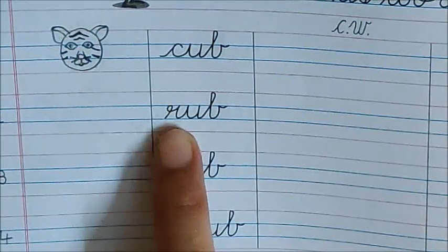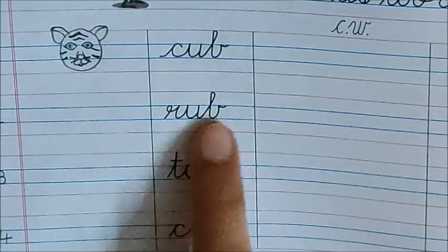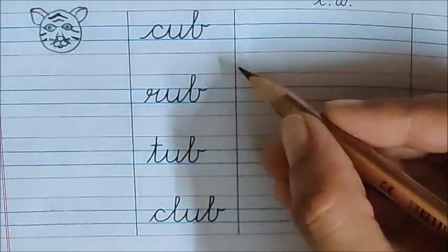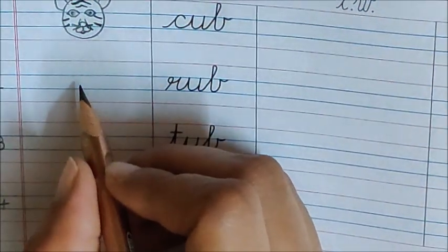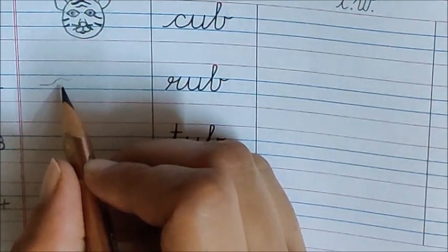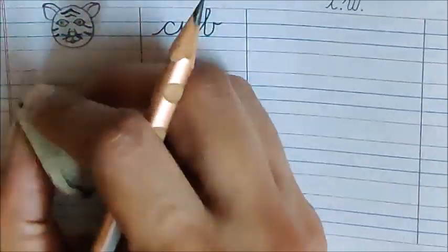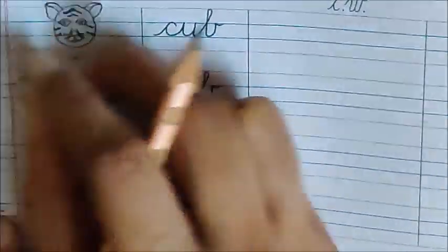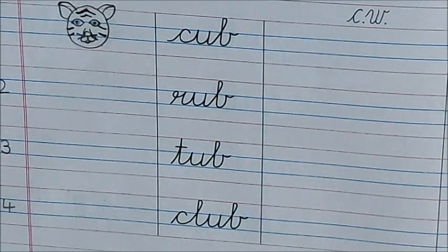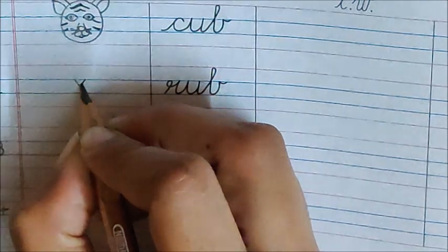Now let's read the next word. R, U, B, Rub. Rub means mitana. If Charu ma'am is writing a word with pencil or drawing any picture, and if I make any mistake, like suppose I make a line here which I don't want to make. I made a mistake here. So I will rub it with my eraser. Rub. Do you see the line here? No, because I have rubbed it. For rub, we will not draw any picture, so put a cross here.